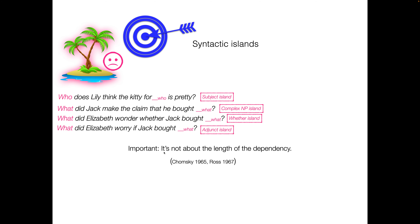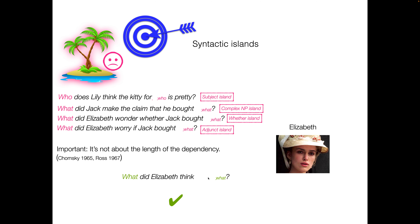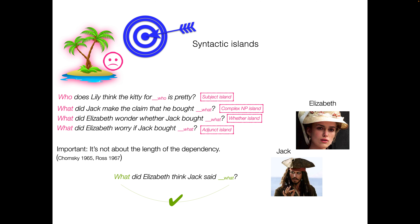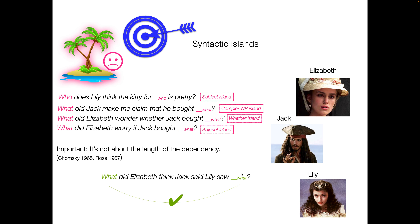The important thing is that it's not really about the length of the dependency, because these are all kind of longish. But you can get longer dependencies that are perfectly fine: 'What did Elizabeth think Jack said?' — that's looking pretty long and it seems fine. We can make it longer: 'What did Elizabeth think Jack said Lily saw?' You might start to forget who's doing what, but it doesn't feel bad in the way 'Who does Lily think the kitty for is pretty?' feels bad. That's the difference.